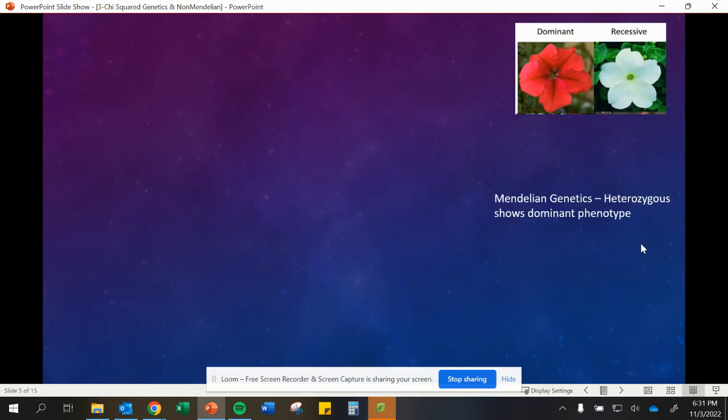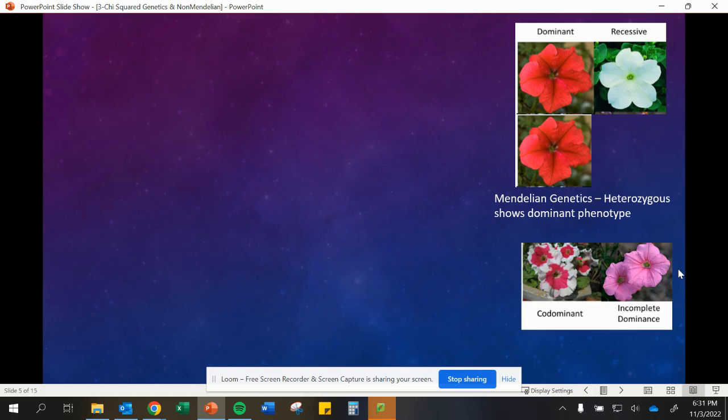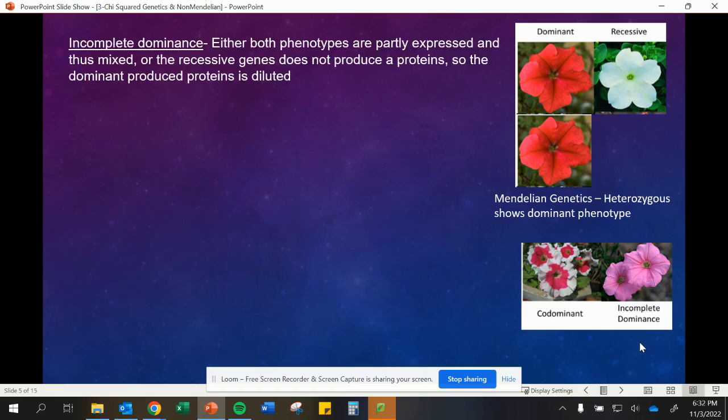Normally in the past, we have heterozygous showing that dominant phenotype. In this case, we have pink flowers versus white flowers, where both heterozygous and homozygous dominant will be that color. But we don't always see that. Sometimes we see where we have a mixture happening, like a pink, or we have them both happening at the same time, like this red or dark pink and white being shown at the same time. We call that codominance or incomplete dominance.